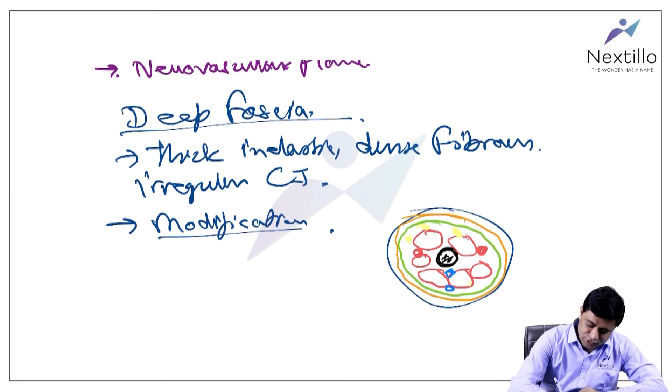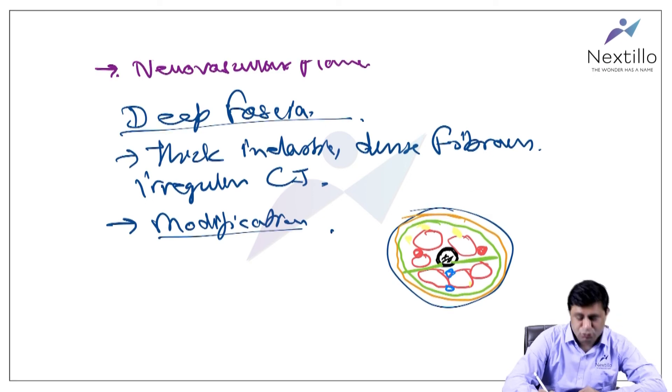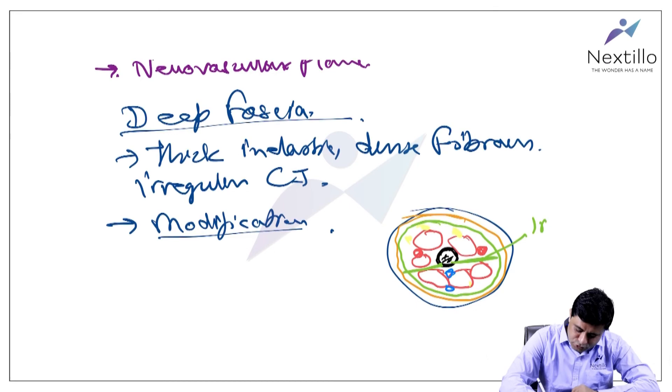What I'm telling you about is the modifications of deep fascia. So this deep fascia, when it reaches deep inside, it continues as intermuscular septum, this intermuscular septum.